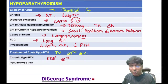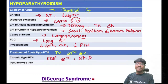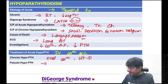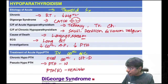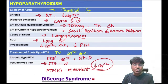Pseudo-hypoparathyroidism: PTH levels are normal but there is PTH receptor resistance, causing hypocalcemia. Treatment requires calcium gluconate supplementation. Pseudo-hypoparathyroidism type 1A is associated with Albright hereditary osteodystrophy.